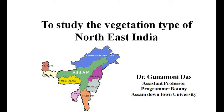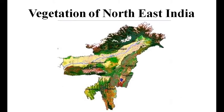Hello students, our today's topic of discussion is to study the vegetation type of Northeast India. The floristic province of Assam includes entire Northeast Indian states and the Brahmaputra Valley of North Bengal including Darjeeling, Jalpaiguri and Coochbehar district of West Bengal, but it excludes the Himalayan ranges between the Testa and the Lohit rivers.